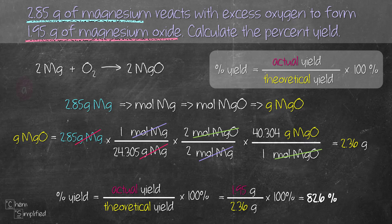To recap, in order to calculate percent yield, we need to first start with the balanced equation, then convert from the given information to find the theoretical mass. Once we have that, we plug it into the percent yield formula.